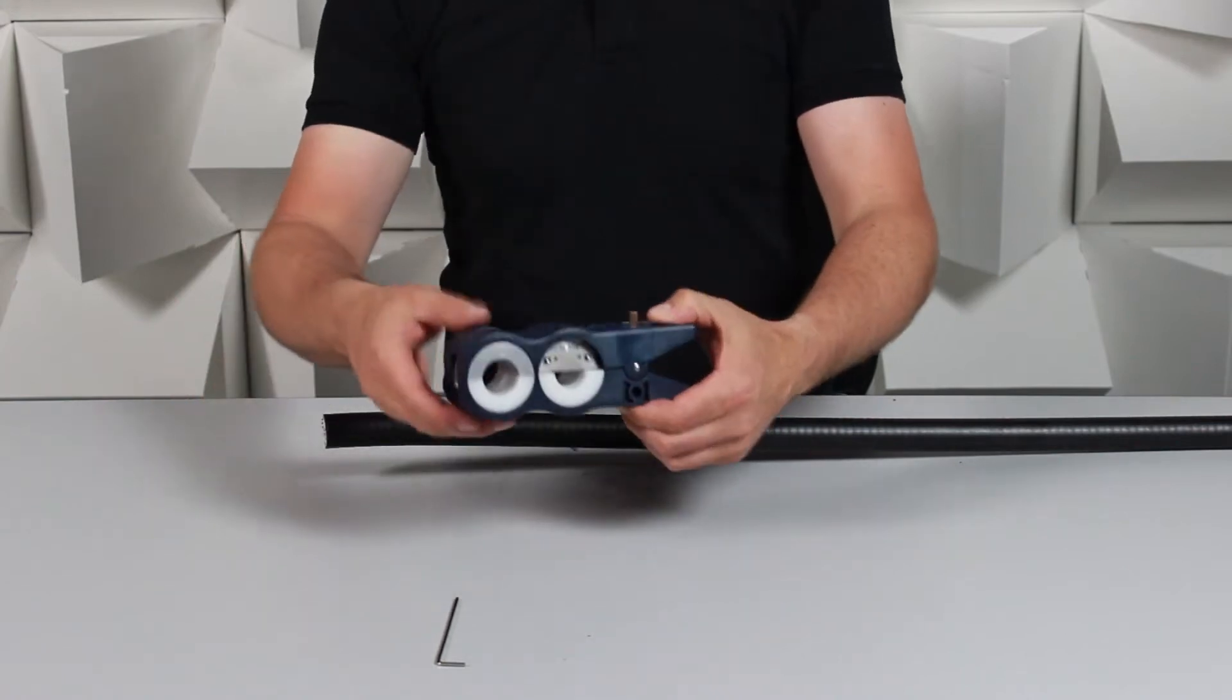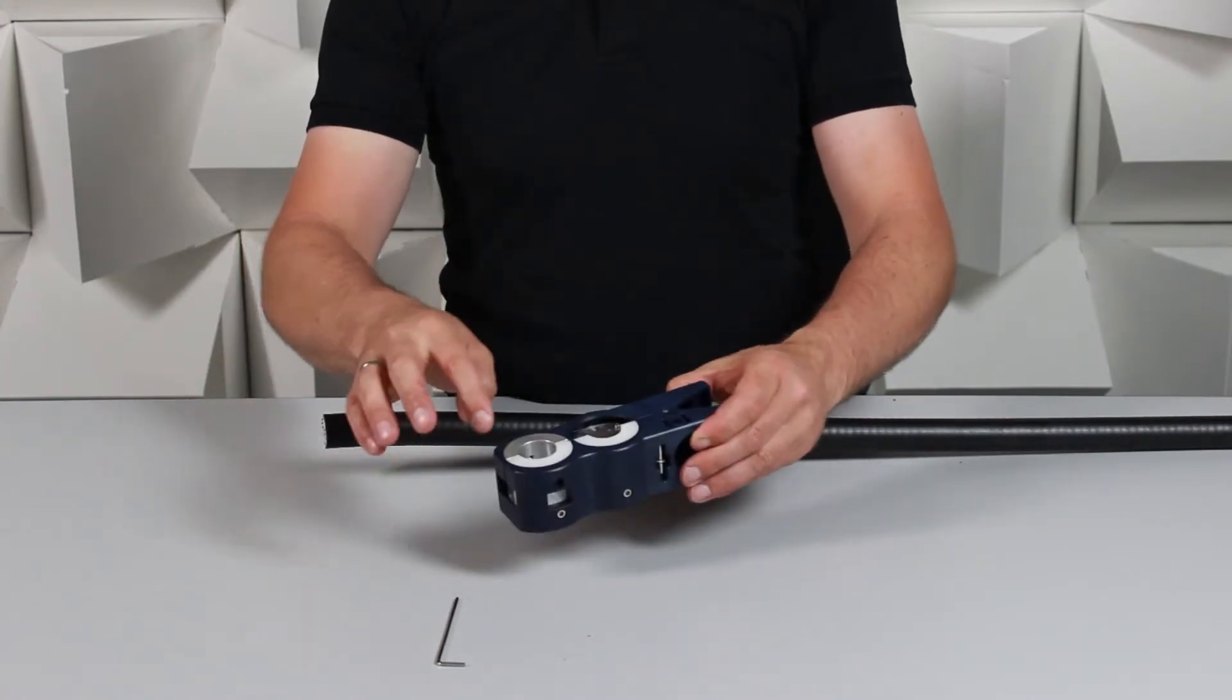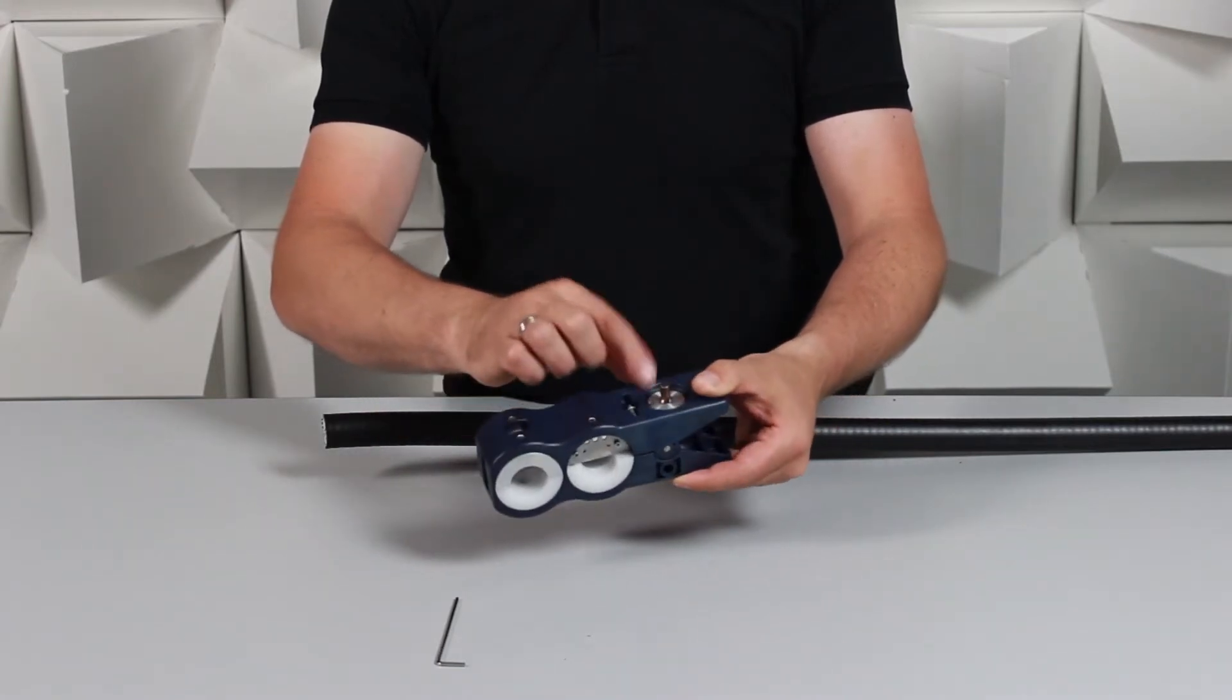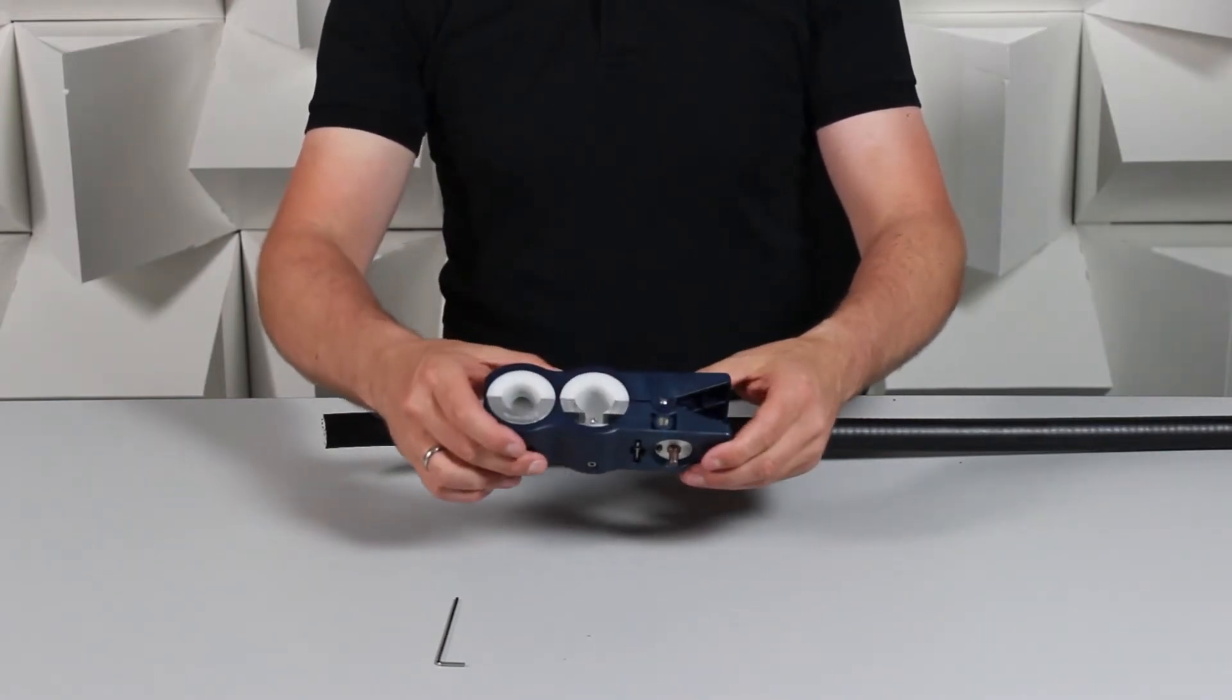What we have is one tool for everything with different inserts, for example stripping the jacket, cutting the cable, flaring tool, even a beveling tool for the center conductor.